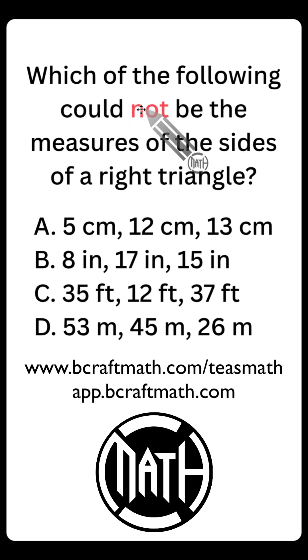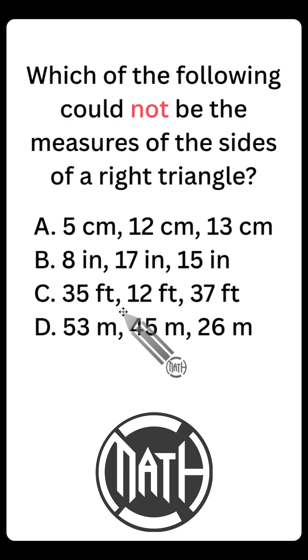And maybe you didn't notice this, which of the following could not be the measures of the sides of a right triangle? Which means three of these choices are going to be the three sides of a right triangle, and one of these choices is not. Right triangle, Pythagorean Theorem, A squared plus B squared equals C squared.